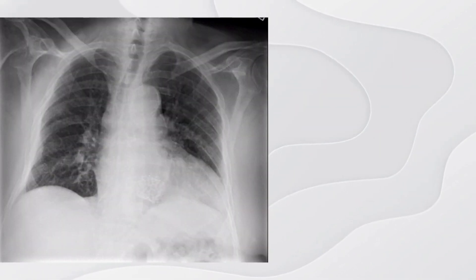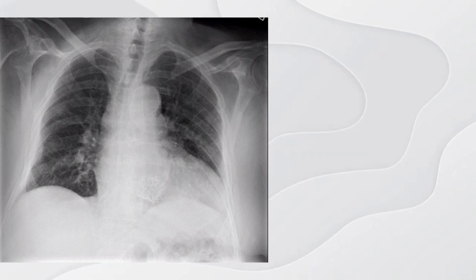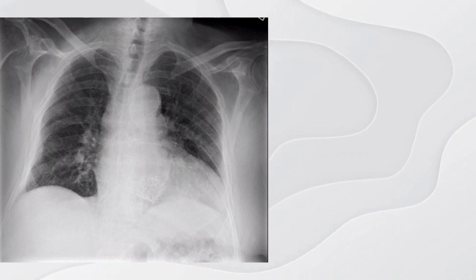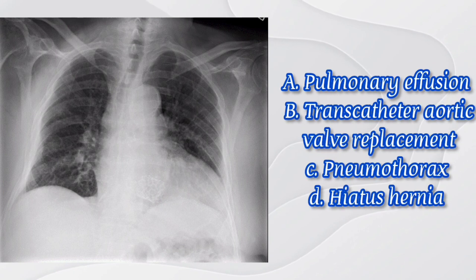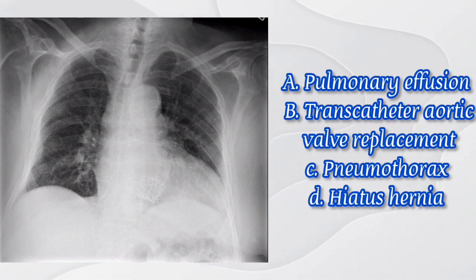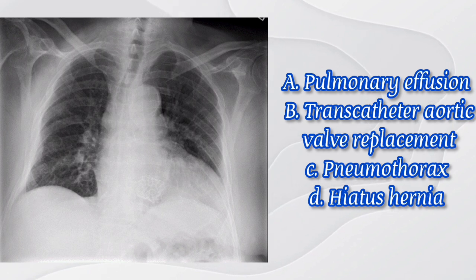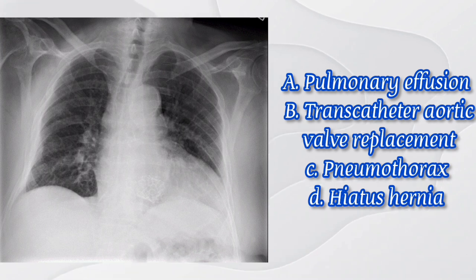Number four: review this radiograph and select the most appropriate diagnostics. The options are: A) pulmonary effusion, B) transcatheter aortic valve replacement, C) pneumothorax, and D) hiatus hernia. The answer here is B) transcatheter aortic valve replacement.